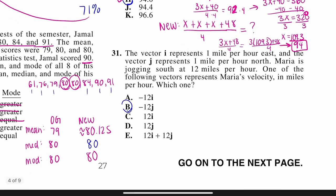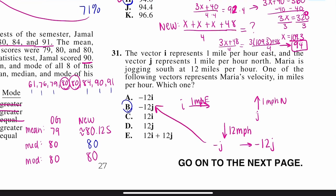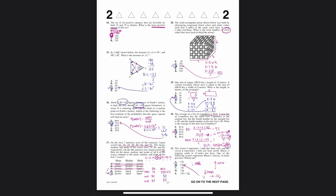Last one — number 31. The vector I represents 1 mile per hour east, and the vector J represents 1 mile per hour north. Maria is jogging south at 12 miles per hour. Which vector represents Maria's velocity? Since she's going south, that's the opposite of J, which is negative J. She's going 12 miles per hour, so her velocity is negative 12J, which is letter B. I think we're officially halfway through the test now — 30 more problems to go. Stick with it. This is good practice for your ACT. Thanks for watching, hope this helps. Subscribe if you want more videos.